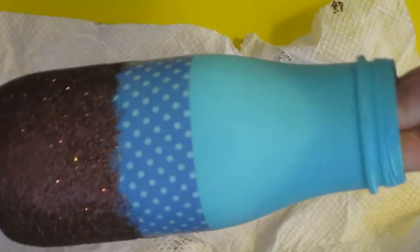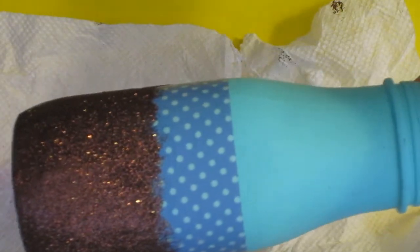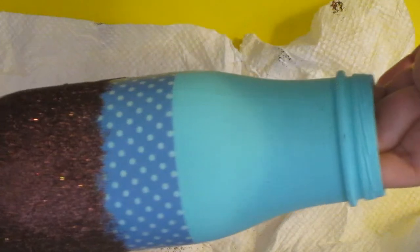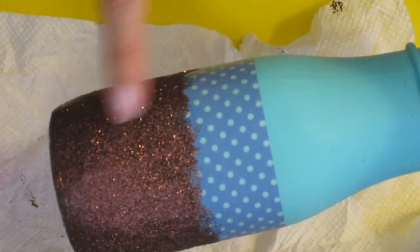And painted it with blue, this sea breeze from Michael's. And I put washi tape around it, use Mod Podge, and put it on Martha Stewart glitter.